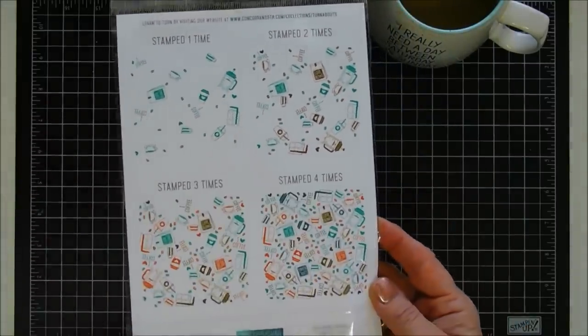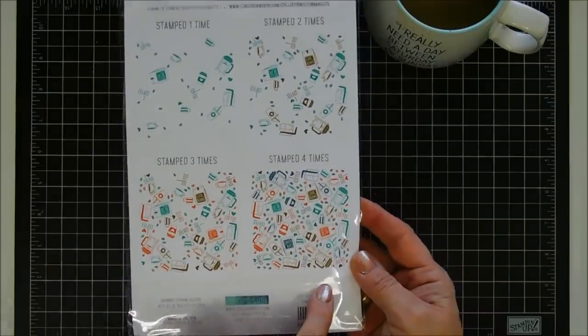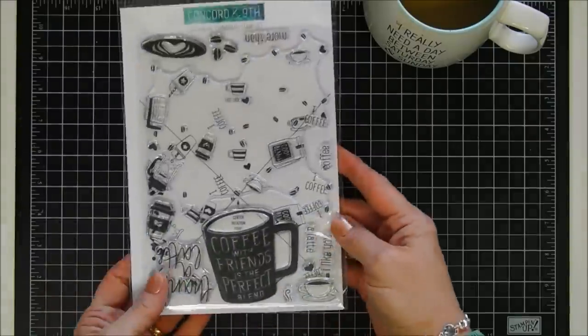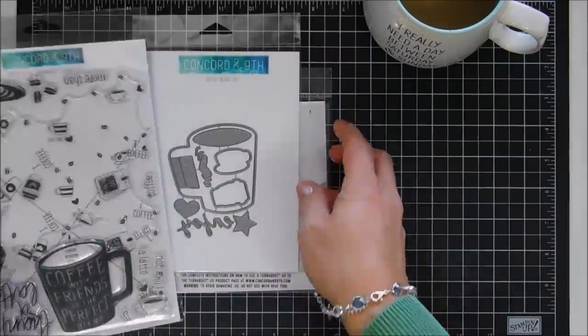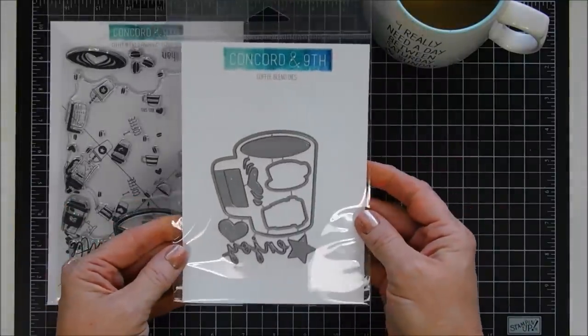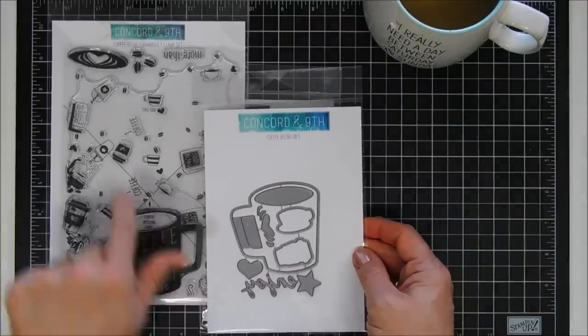On the reverse side it shows you stamping once, twice, three times, and then four times to get that full background in a variety of colors. I'm excited to share it with you. If you've never tried a turnabout stamp set, I hope you like this tutorial too.